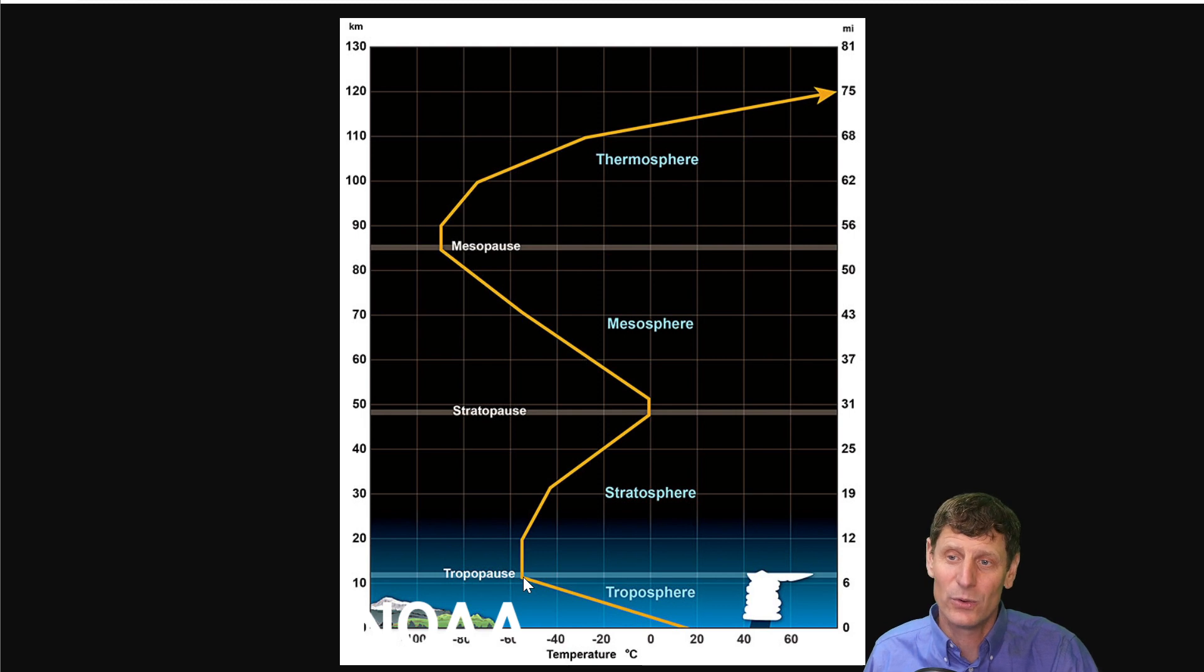The tropopause refers to the pause in the cooling of the atmosphere. The troposphere gets colder and colder the higher we go until the tropopause, at which case it stops getting colder and it starts getting warmer eventually. So this tropopause is where it stops getting colder and just stays quite cold.